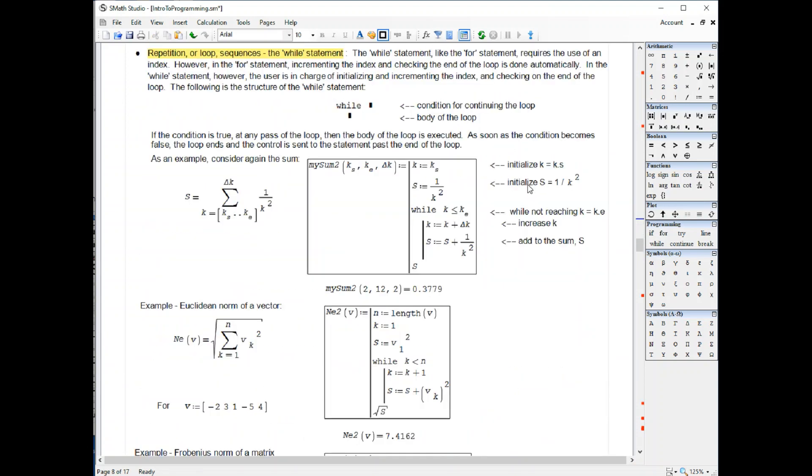Well, in a while statement, you have to initialize the index, initialize, in this case, the sum that we want to calculate, put a condition, in this case, k less than or equal to k final, and then in the body of the loop using a line here, you modify the index by increasing it by delta k, and then you also modify the summation by summing 1 over k squared.